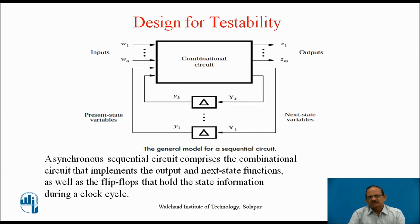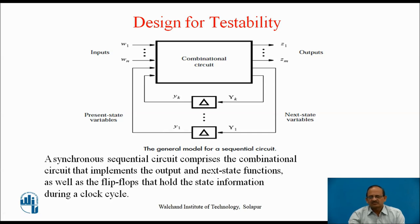This particular diagram shows the general model for a sequential circuit. Here, the external inputs are W1 to Wn, and the circuit outputs are Z1 to Zm. The state variables — next state variables Y1 to Yn and present state variables y1 to yn — are not externally available. The combinational circuit can be tested very easily by applying these external inputs, and it is also possible to observe the outputs Z1 to Zm, because these are externally available.